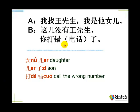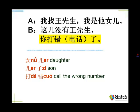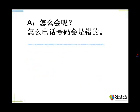Let's repeat, please. 我找王先生。 我是他女儿。 这儿没有王先生。 你打错了。 OK, let's move on to the next slide. Listen, please. 怎么会呢？ 怎么电话号码会是错的呢？